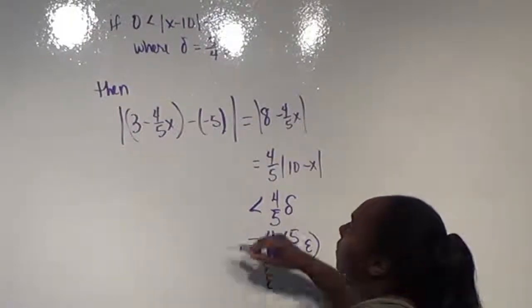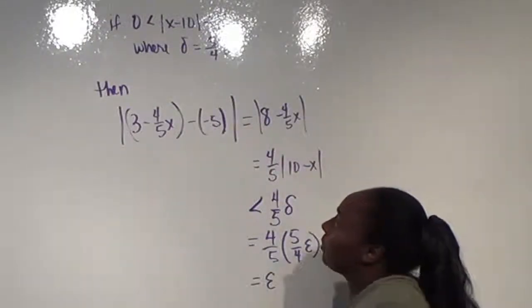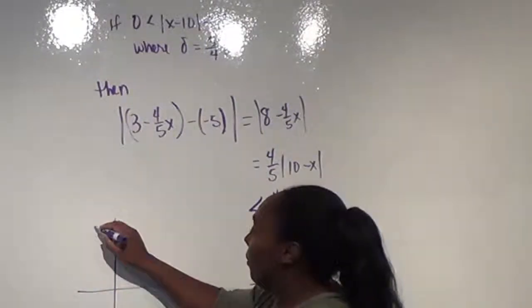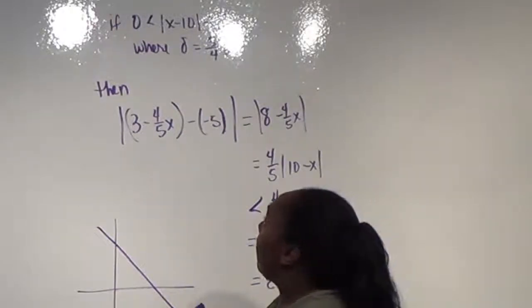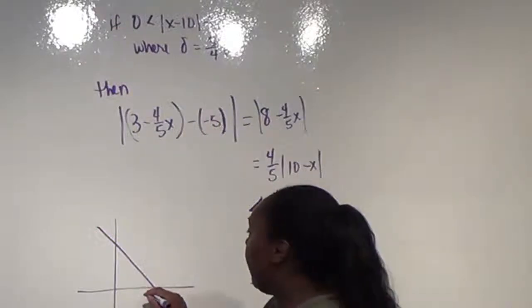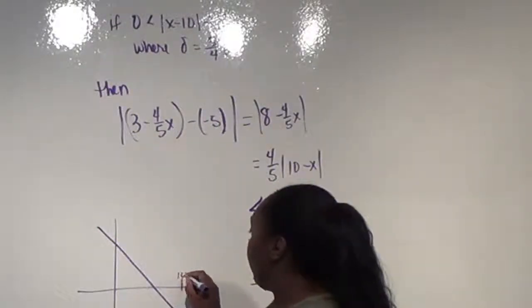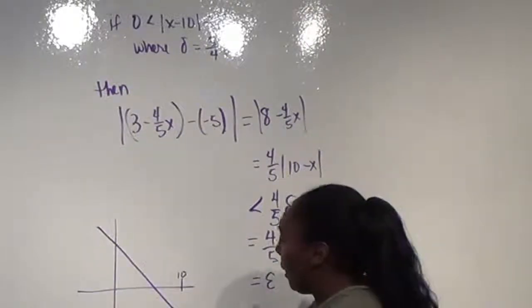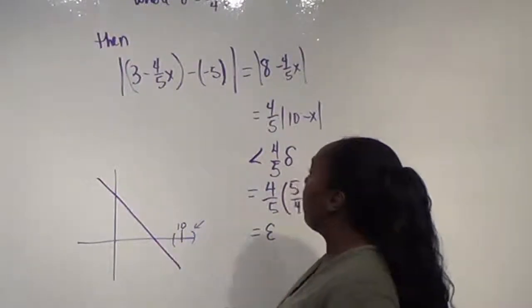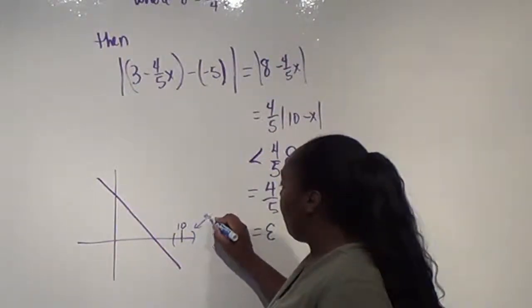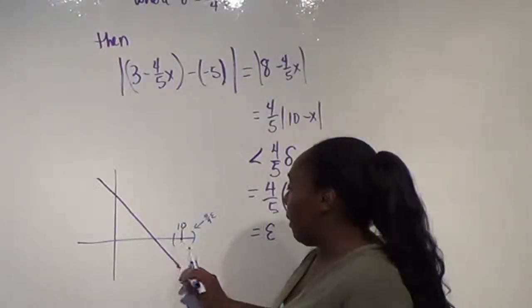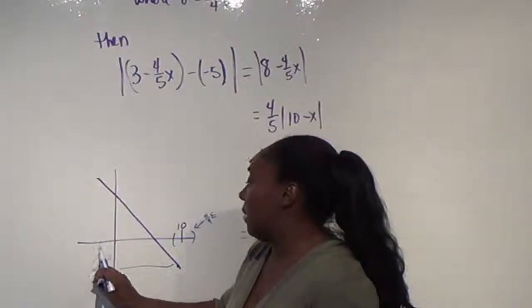So as long as when we look at these intervals, so in this case if I kind of drew in a graph here, this is a linear function that's decreasing, if I'm looking at when x is 10, so way over here somewhere, as long as I am picking a small enough interval, and in this case that interval being at most 5/4 epsilon, then I know that my limit at that point is going to be at negative 5.